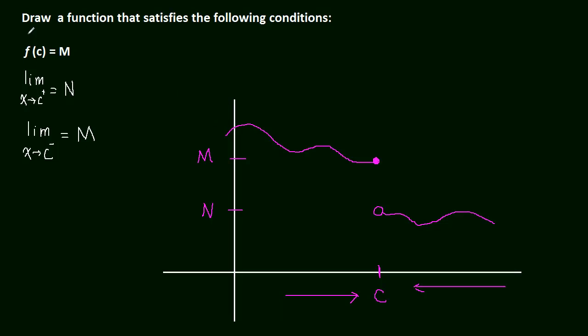But just remember that the limit, when we have a limit as x approaches c, the number references a height. These are all heights, the limits. And of course the f(x) values are also heights. So M and N are just heights. c is an x-value. We just see what happens when we plug c into the function and when we take the limit.